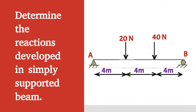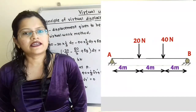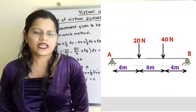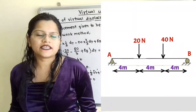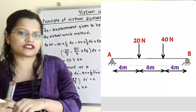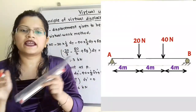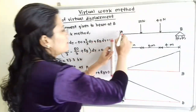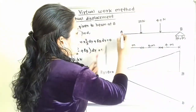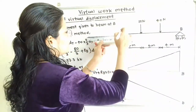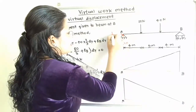Given question: determine the reactions developed in a simply supported beam. Let us understand the given diagram. It is a simply supported beam. At end A, it is hinged, so the reaction can be in any direction and we will show it as components. For the vertical component, we will write it as VA, and for the horizontal component, we will write it as HA.